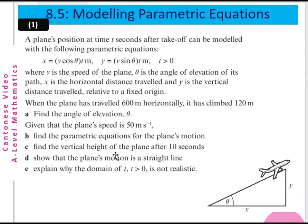Part c — Find the vertical height of the pen after 10 seconds. Part d — Show that the pen's motion is a straight line. Part e — Explain why the domain of t (t > 0) is not realistic. We solve the problem one by one, from part a to part e.